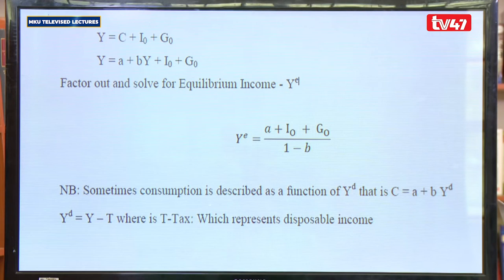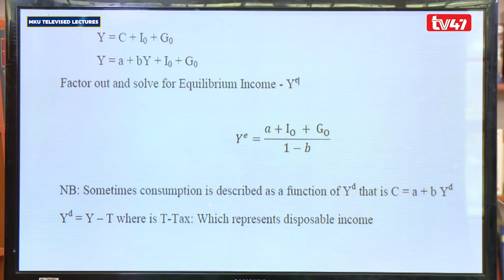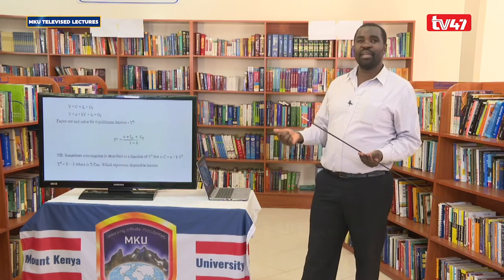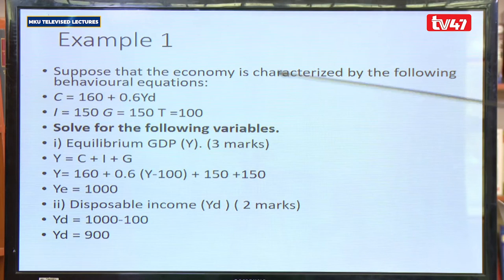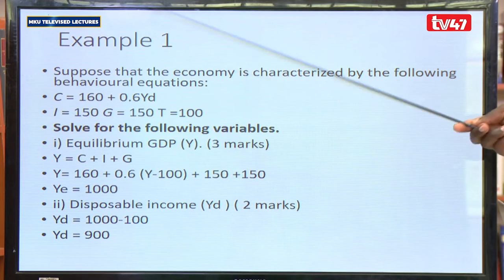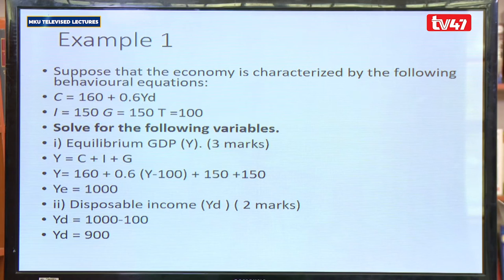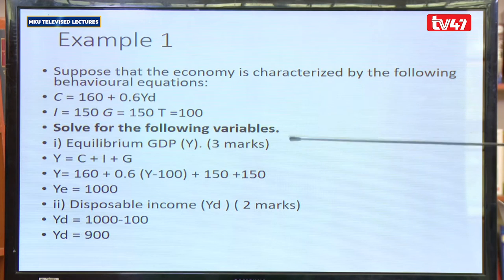Whatever we receive — just like on our payslip where we have gross and net — the net is what we are able to spend: our disposable income. To get disposable income, we take total income and deduct taxes. For example, we are given C equals 160 plus 0.6Yd, I equals 150, G equals 150, and T equals 100. We need to get the value of Y. Taking these figures, we have: 160 plus 0.6 times (Y minus 100) plus 150 plus 150.